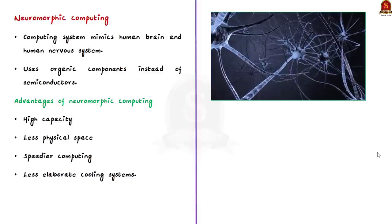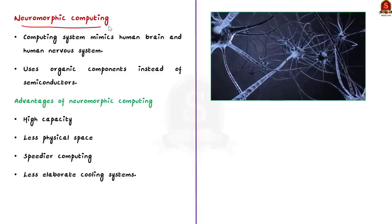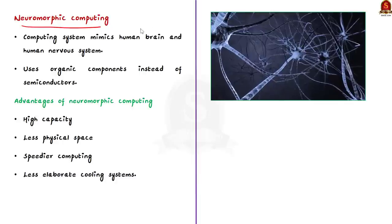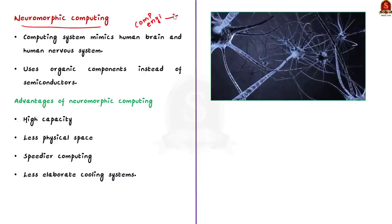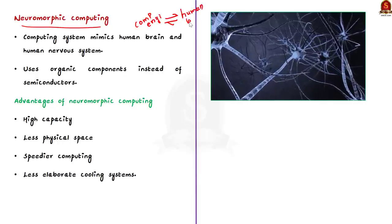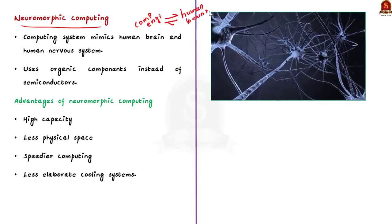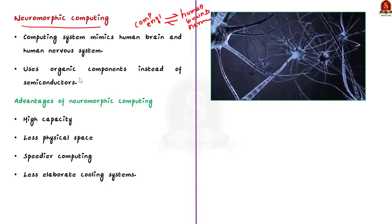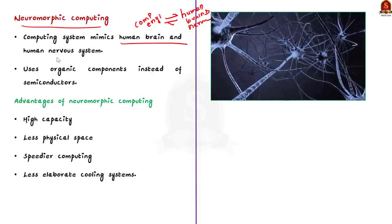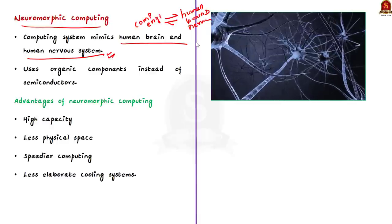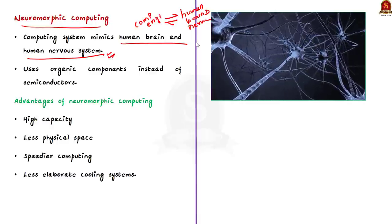Let us take the term neuromorphic computing. What is it? It refers to a method of computer engineering in which elements of the computer are modeled after the human brain and the human nervous system. Basically, in a neuromorphic computer, both the software and hardware are designed to mimic the functioning of the human brain and the human nervous system. This is the basic definition of neuromorphic computing.